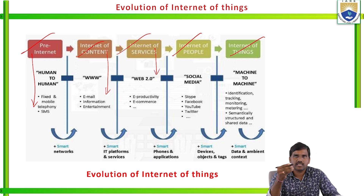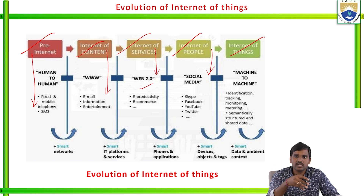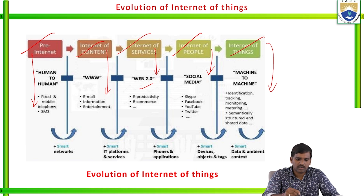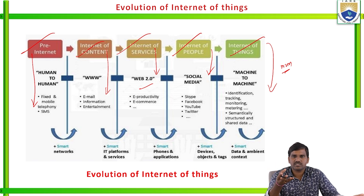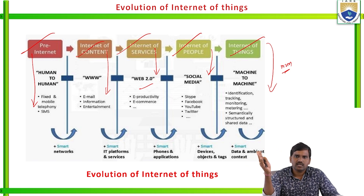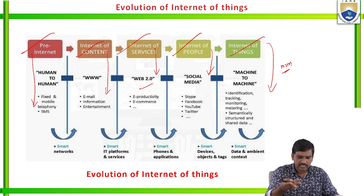Internet of people is where we use social media like Skype, Facebook and YouTube. Internet of Things deals with machine-to-machine communication — very important. The communication goes on machine to machine. A basic example for machine-to-machine is the ATM. When you want to withdraw money from an ATM machine, you insert the ATM card and it automatically fetches details from the server in the bank. Communication goes on between the ATM and the server — both are machines. That is Internet of Things.